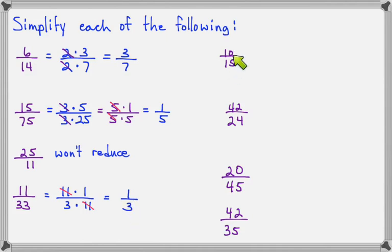Let's look at 10 over 15. Both of these can be written as something times 5. So we'll write the top as 2 times 5 and the bottom as 3 times 5. And we'll cross out the 5s. And notice that we have left 2 over 3.